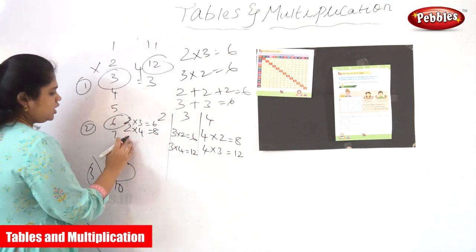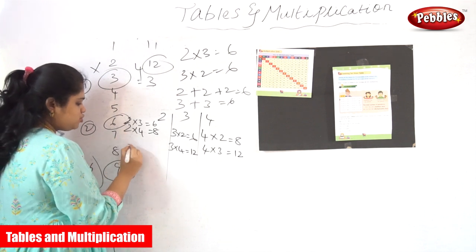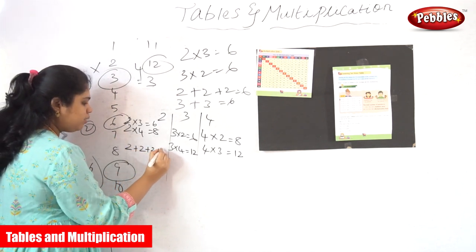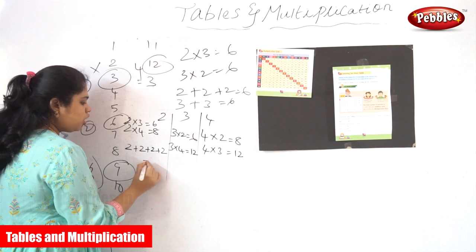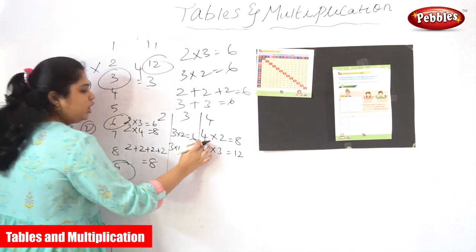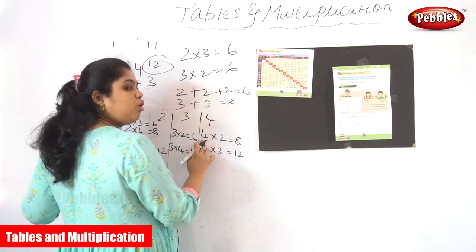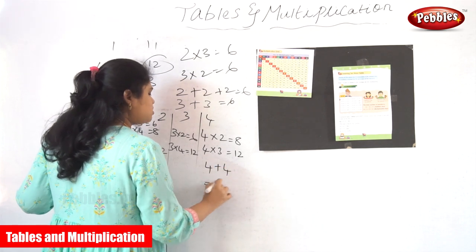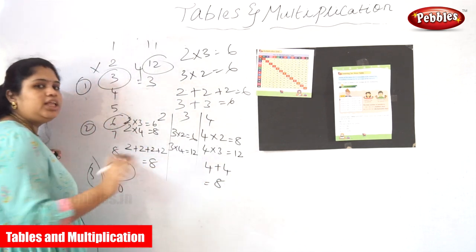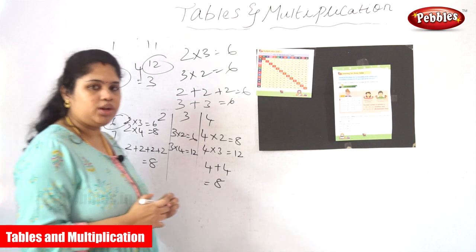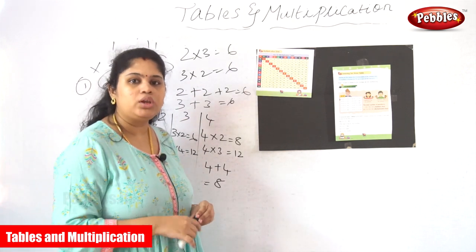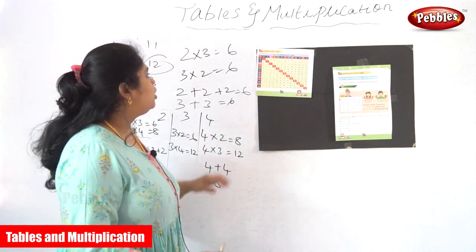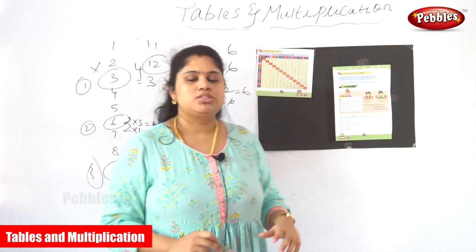See here — 2 comes 4 times means what will be the answer? 8. What you are telling? If 4 comes 2 times, it is also 8. Finally, the answer will be the same. So don't worry about it or don't get confused about it. So next we are going to see about the 5 tables.